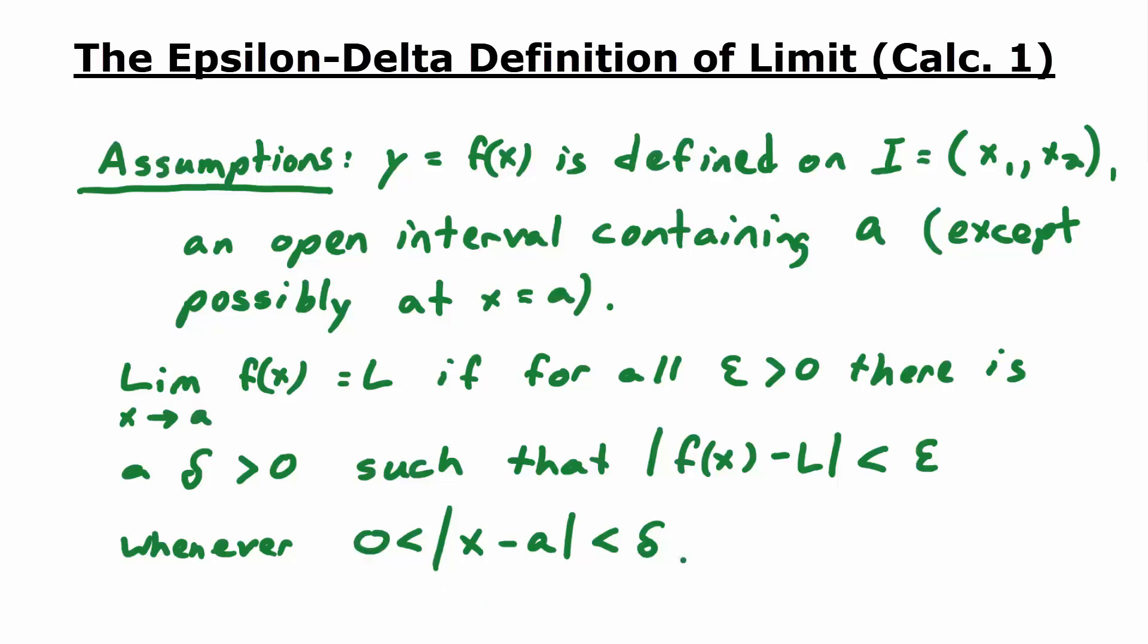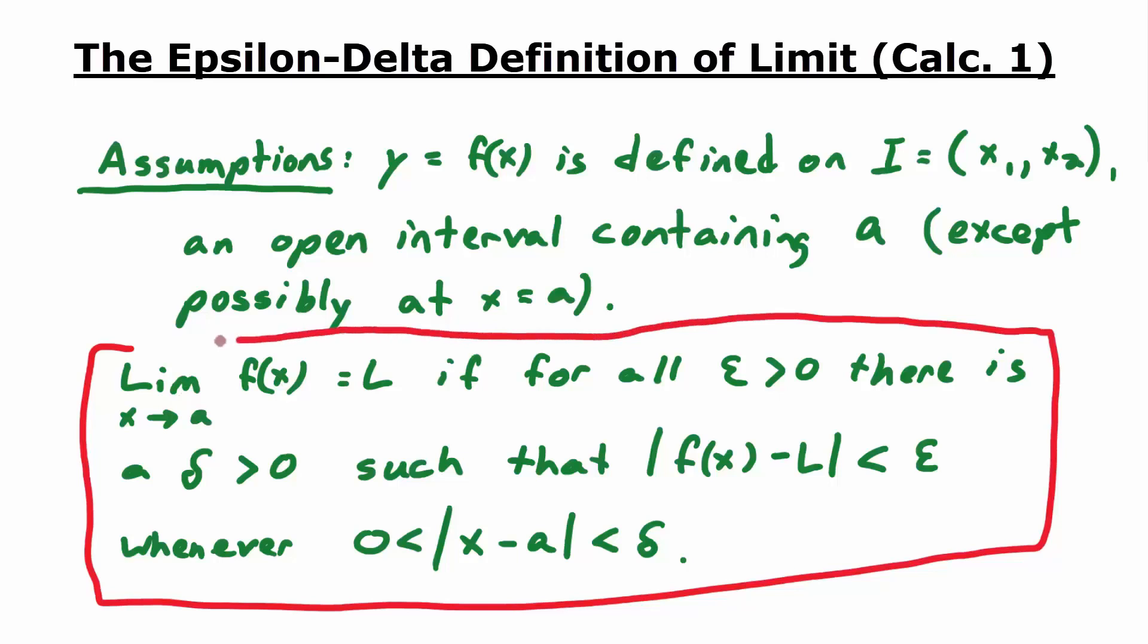So this is just a formal way of saying what the picture that we just got done talking about says. You give me an epsilon, then there is a delta, such that we can get the distance between f of x and L less than epsilon, as long as x is within delta of A, but not equal to A itself. As long as all that's true, then this limit is going to exist.